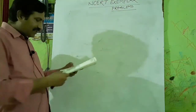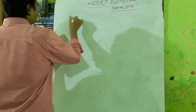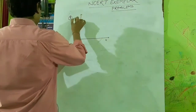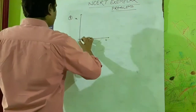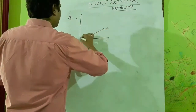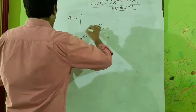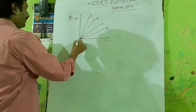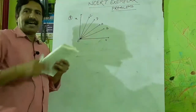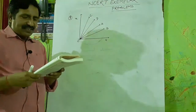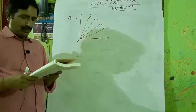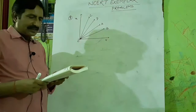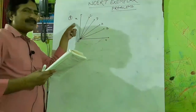Question eight involves a diagram showing distance-versus-time graphs for four cars A, B, C, and D moving on a level road. The X-axis represents displacement and the T-axis represents time. Four different lines on the graph correspond to cars A, B, C, and D respectively.